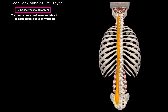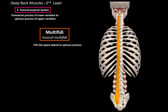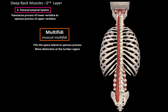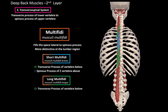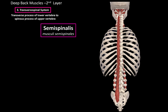Then we have the multifidi, slightly larger muscles that fill the space lateral to the spinous process, more distinctive at the lumbar region. The multifidi also consist of short and long fibers. The short multifidi originate at the transverse process of the vertebrae below and insert at the spinous process of two vertebrae above. The long multifidi originate at the transverse process of the vertebrae below and insert at the spinous process of three vertebrae above.